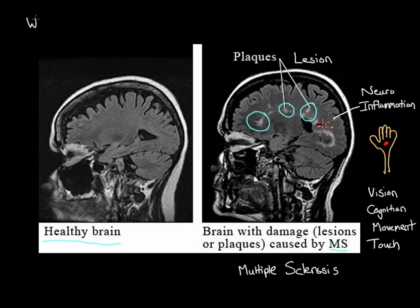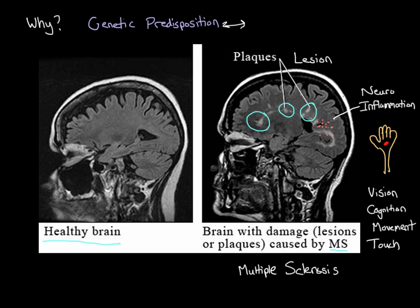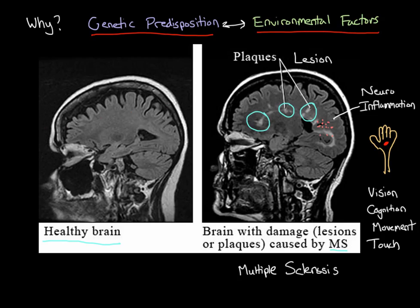Why do these lesions form? Why does the immune system attack the brain? The problem is that we don't actually know with 100% certainty what causes multiple sclerosis. All we know is that some people may have a genetic predisposition towards developing the disease, and there are probably some environmental factors involved as well. Your genetics can interact with the environment and stimulate the progression of the disease. The exact genes and environmental factors involved will be covered in a later video.